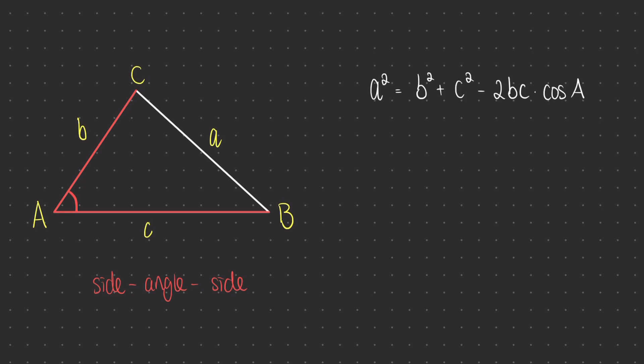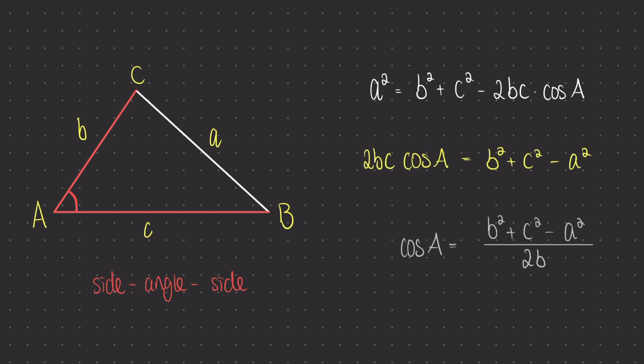We can also rearrange this equation to find the cosine of A. If we're looking for the angle, this is going to make our life a lot easier. What I'm going to do is add 2bc times cos A on both sides and subtract a squared on both sides. Then I can divide both sides by 2bc. This gives me the cosine of the angle A, and if I wanted to find the value of A, I could do the inverse cosine on both sides.